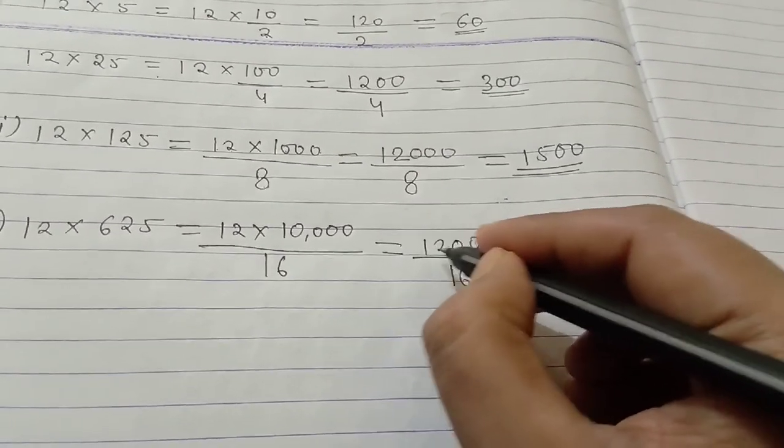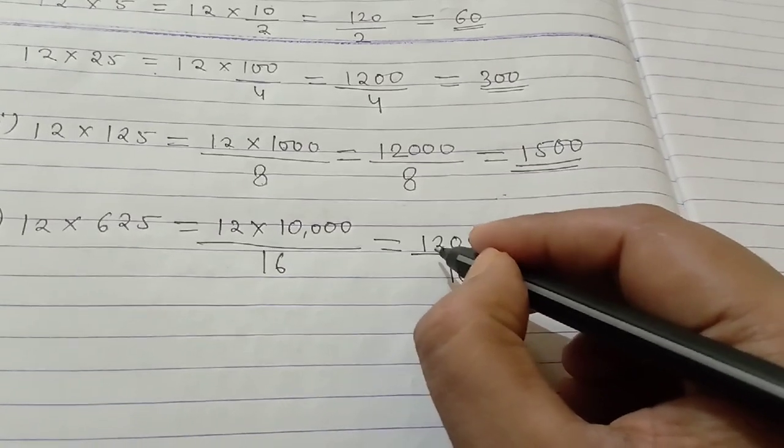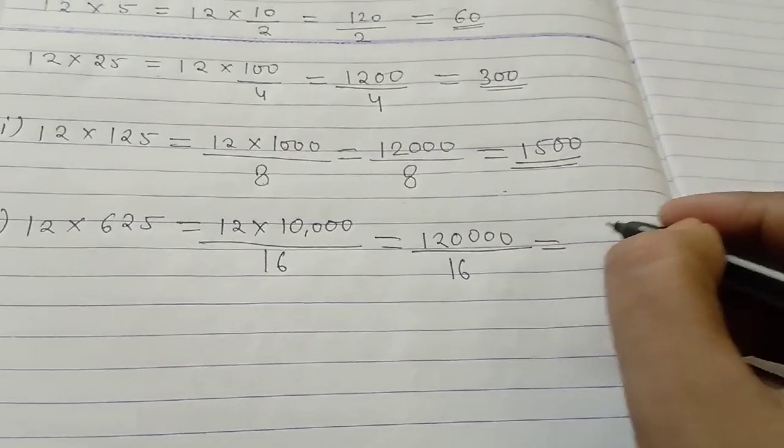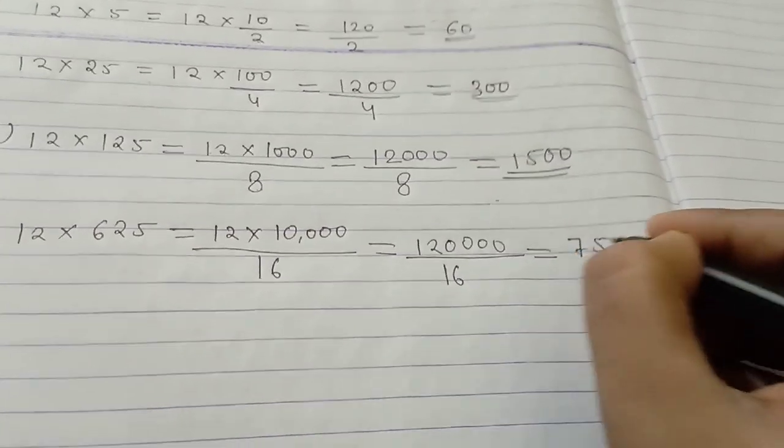If you simplify, 120,000 divided by 16, you will get 7500. This is the answer.